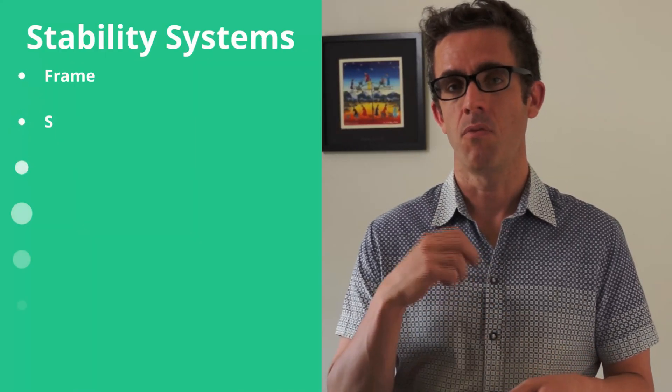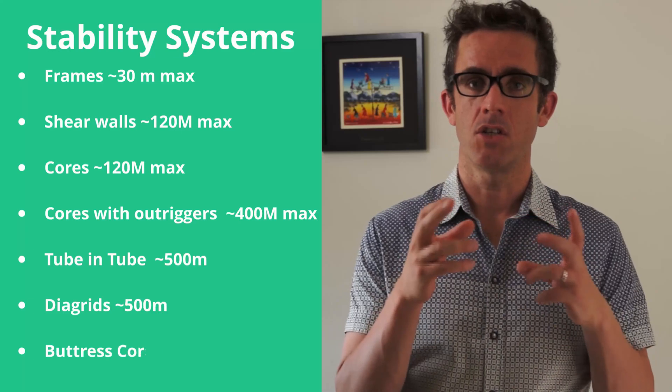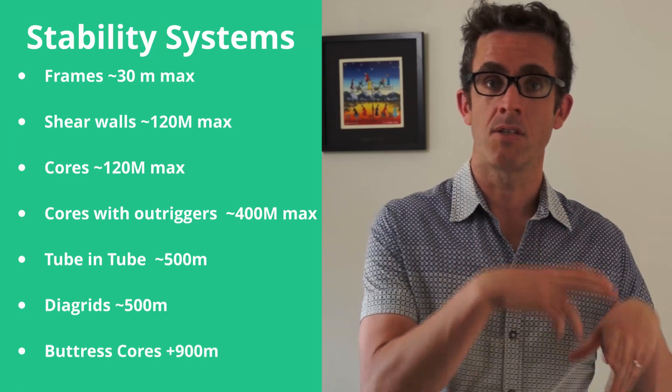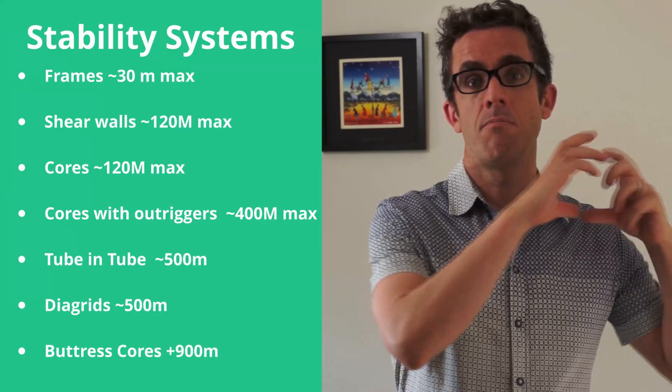Let's go through some basics. Stability systems change depending on the height of your structure. Starting at lower heights we have more frames, then we move into shear walls, then cores, cores with outriggers, tube-in-tube, diagrids, buttress trusses, and so on — each allowing us to construct further and further. Each has unique properties and design characteristics, and the height you're going will generally dictate what type of system you adopt. Sometimes architecture also requires one method over another.